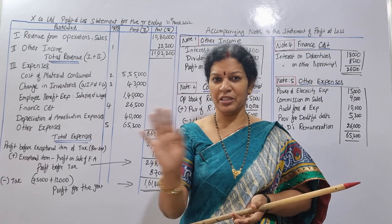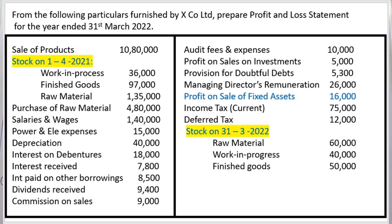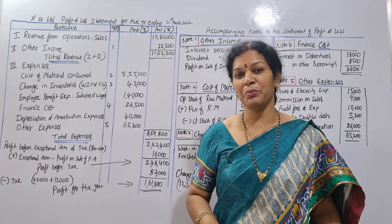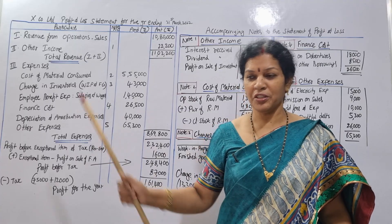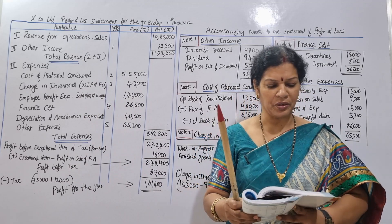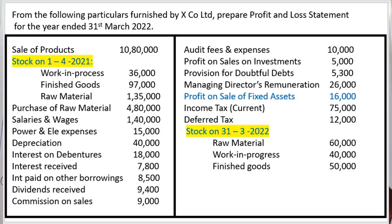First, you will see the problem on the screen. Pause the video and try to work it out yourself. You will make a statement of profit and loss. Try to discuss each and every item. From the following particulars furnished by XN Company Limited, prepare a profit and loss statement for the year ended 31st March 2022.